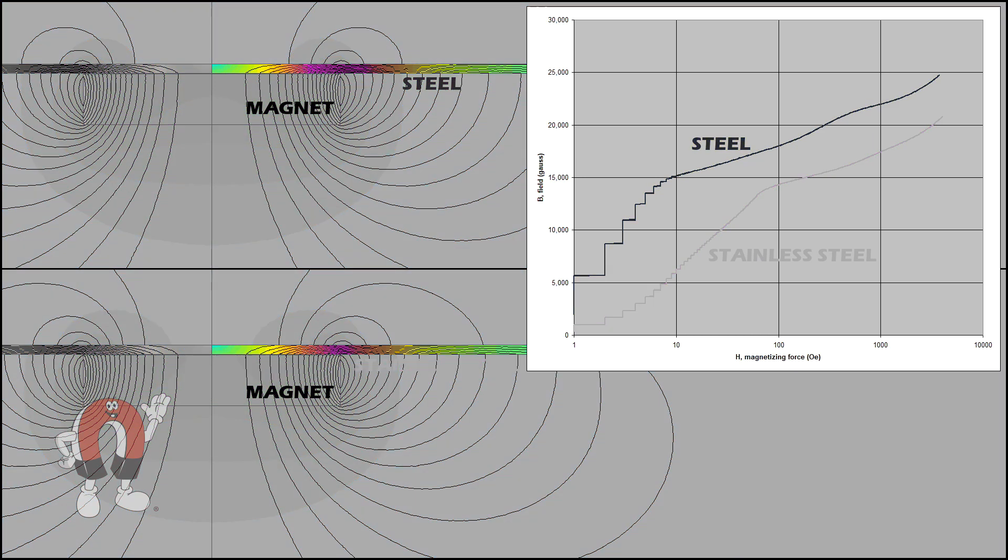One, the regular steel on top reaches a higher field strength. There's more purple in there. And two, above the edge of the magnet, where the field is strongest, some magnetic field leaks out the other side. For the stainless, it looks like it leaks more. The magnetic field on top of the stainless covers a bigger area with more strength.